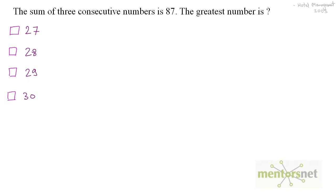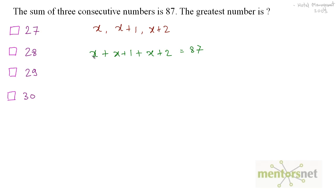The sum of three consecutive numbers is 87. What is the greatest number? If we assume the first number to be x, the next consecutive number will be x plus 1, and the next will be x plus 2. So we have the three consecutive numbers x, x plus 1, and x plus 2. Their sum equals 87, so x plus x plus 1 plus x plus 2 equals 87.